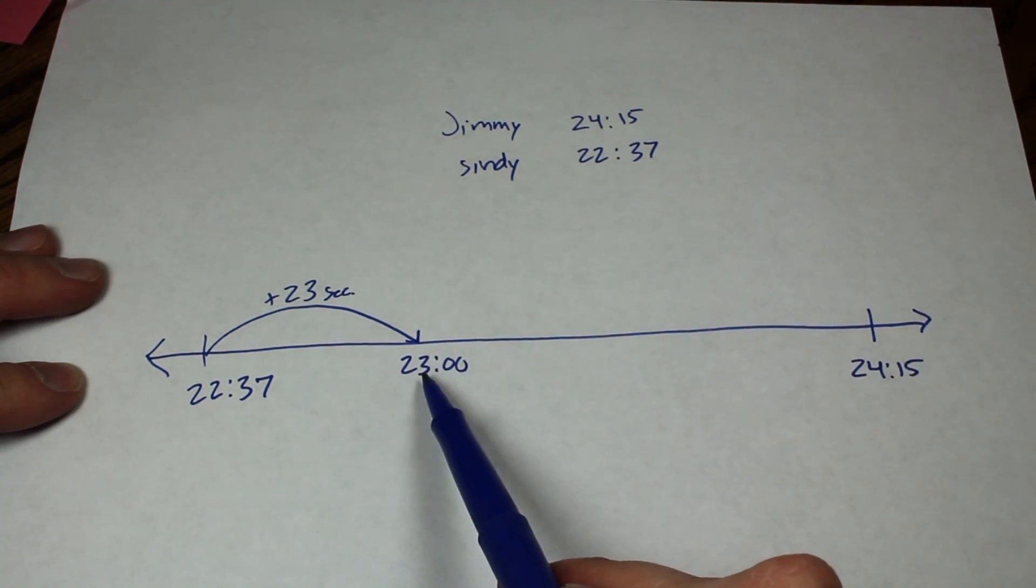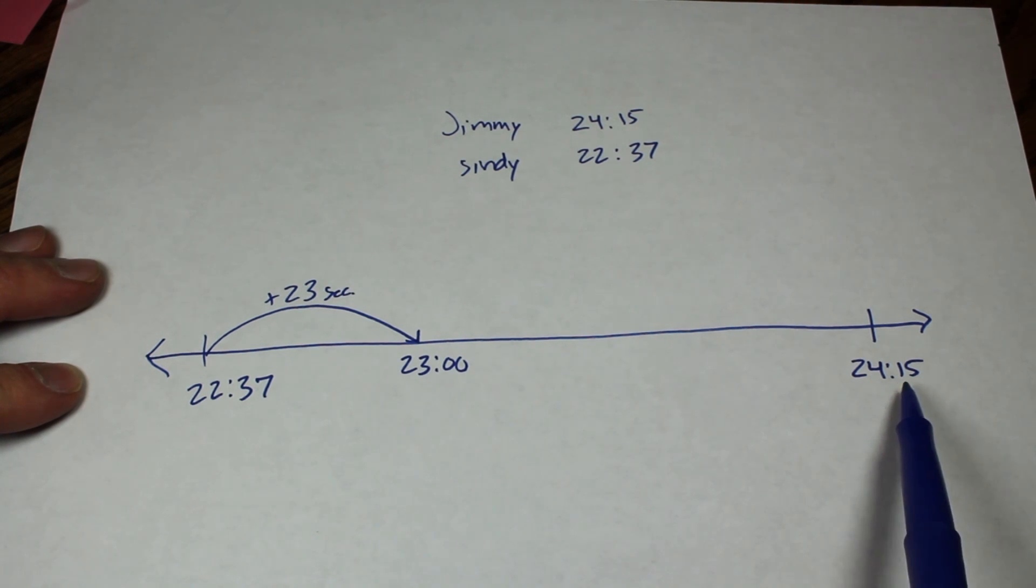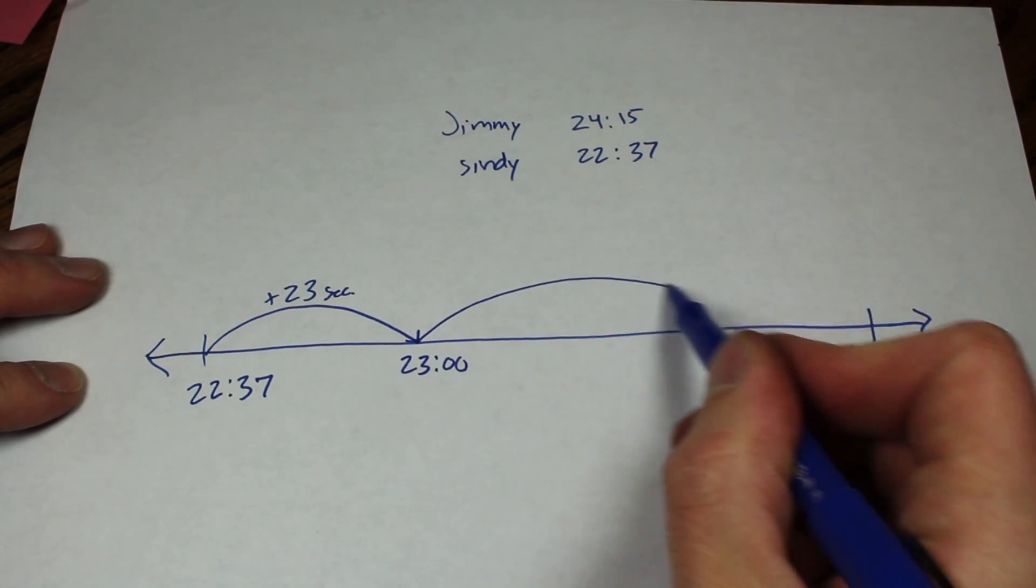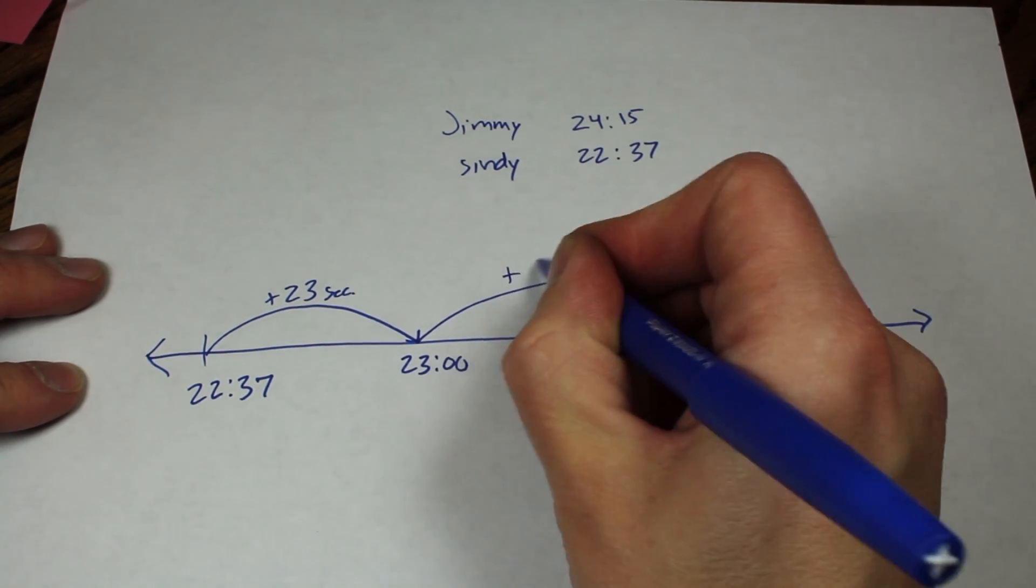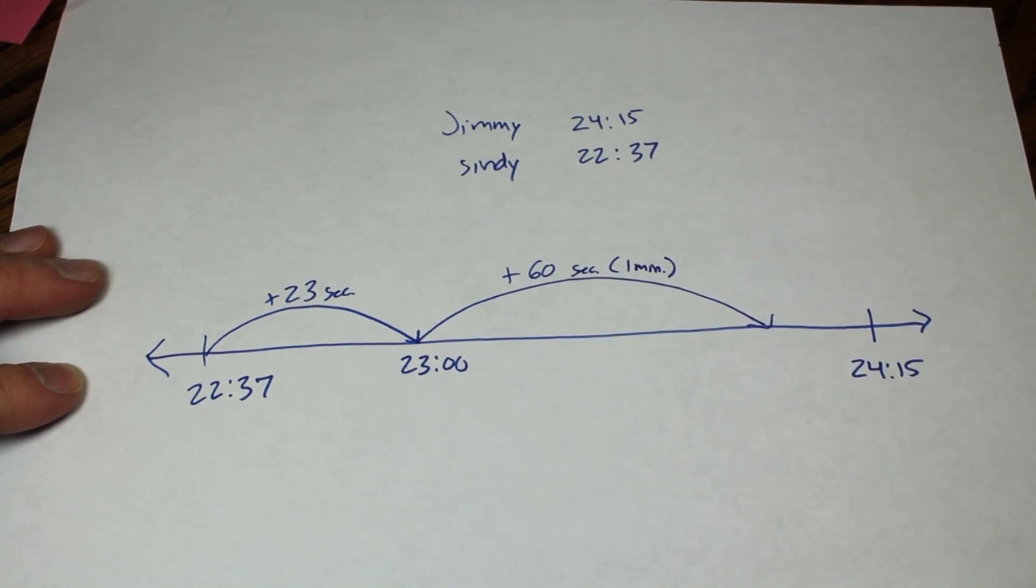Then I want to get from 23, I'm going to get close to 24:15, but I want to keep it simple. So let's just go to 24 minutes. So in order to get to 24 minutes, I'd have to add 60 seconds, or you can also think of that as add one minute.